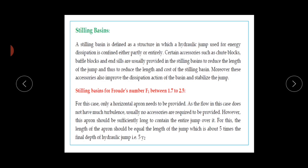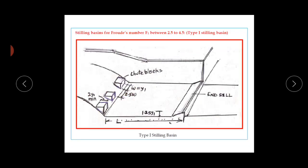The apron should be sufficiently long to contain the entire jump. The length of the apron should equal the length of the jump, which is 5 times the final depth y2, where y2 is the final depth of the hydraulic jump. The stilling basins and hydraulic jumps are provided at the toe of the spillway. The apron is a concrete structure provided such that the kinetic energy is reduced over its length. This type is used for a Froude number between 1.7 to 2.5.